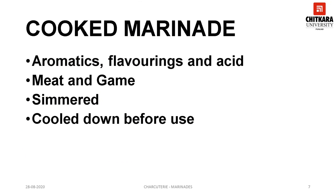Cooked marinades are those in which all the ingredients of the marinade are simmered, so that the flavors from all the ingredients are infused in the marinade. The basic ingredients used in a cooked marinade are aromatic vegetables like carrot, shallots and onions; seasoning like salt and pepper; flavorings like bouquet garni and parsley; and acid like vinegar and wine. Cooked marinade is generally used for meat and game, and a cooked marinade must be cooled down before use.